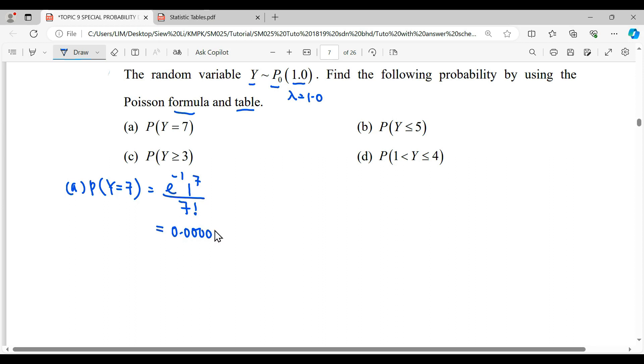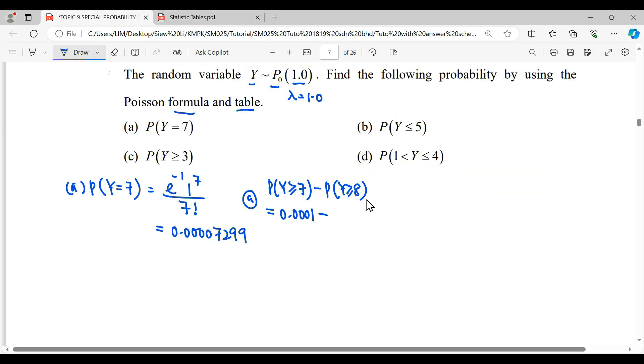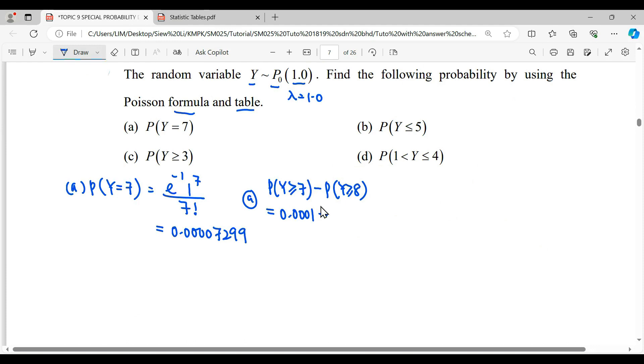Another way, if we want to read from the table, we will read more than or equal to 7 minus more than or equal to 8. After you read the reading for more than or equal to 8 and subtract it off, you will leave number 7. Referring to the table with lambda equals 1, the reading for 7 is 0.001. The reading of 8 does not exist, meaning the probability will be 0.